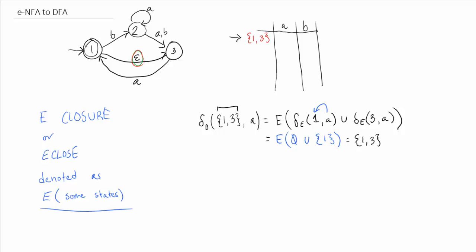That's just 1 and 3. So then we can put that in our fancy table. That is just 1 and 3 again. So let's go a little bit quicker now.